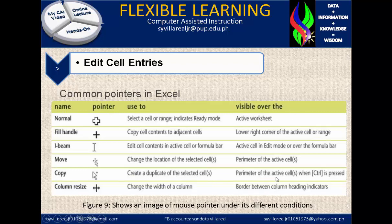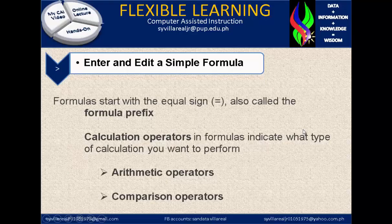The last pointer is column resize: an arrow pointing left and right in a cross position, used to change the width of a column; visible over the border between column heading indicators. Next topic: enter and edit a simple formula. Formulas start with the equal sign, also called the formula prefix. Calculation operators in formulas indicate what type of calculation you want to perform.